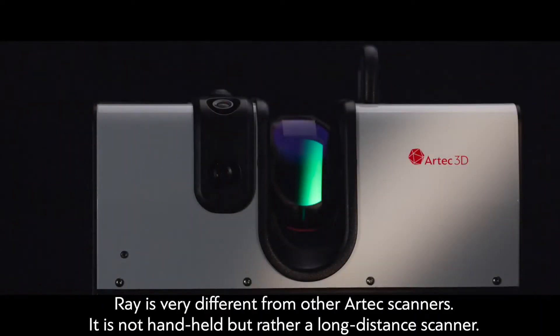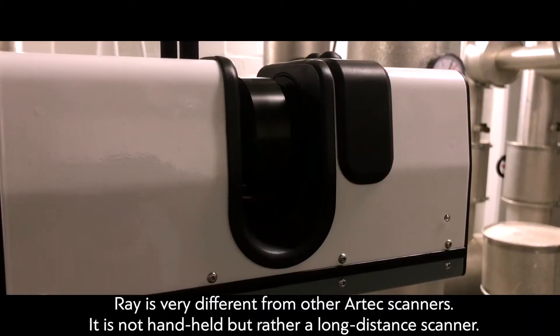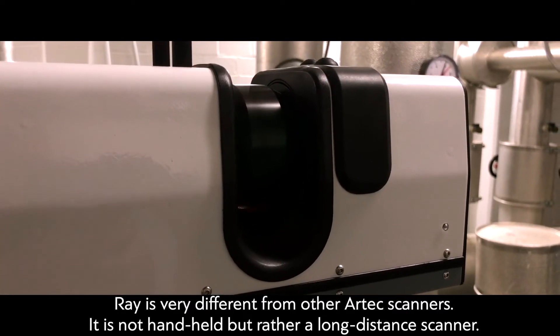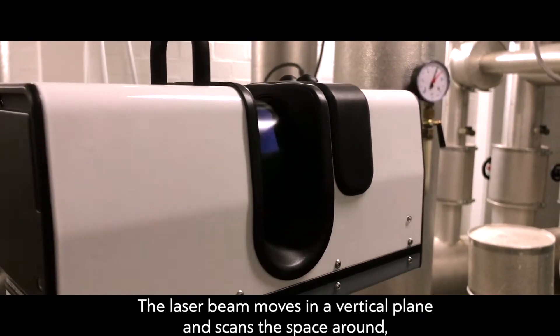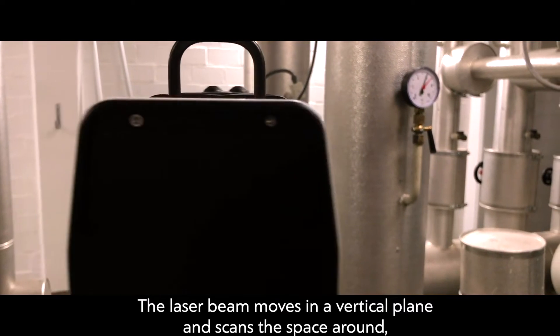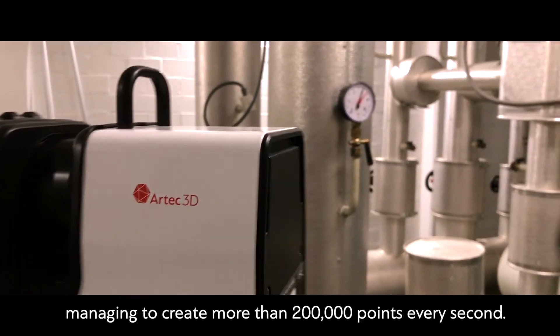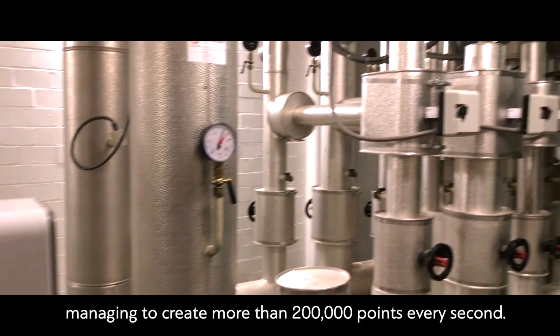But Ray is very different from other Artec scanners. It is not hand-held, but rather a long-distance scanner. The laser beam moves in a vertical plane and scans the space around, managing to create more than 200,000 points every second.